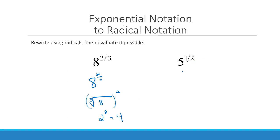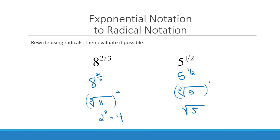What does 5 to the 1/2 mean? That means you're taking the square root of 5 to the first power. Both the 2 and the 1 do not need to be written, because it's understood that when you have a square root there's a 2, and it's also understood that anything can be raised to the first power.